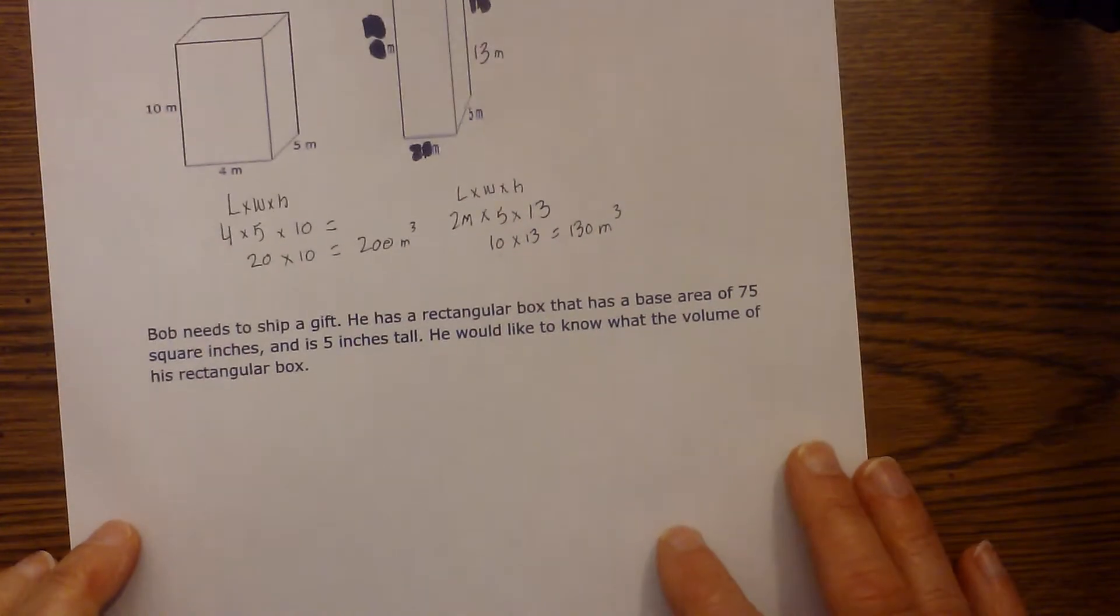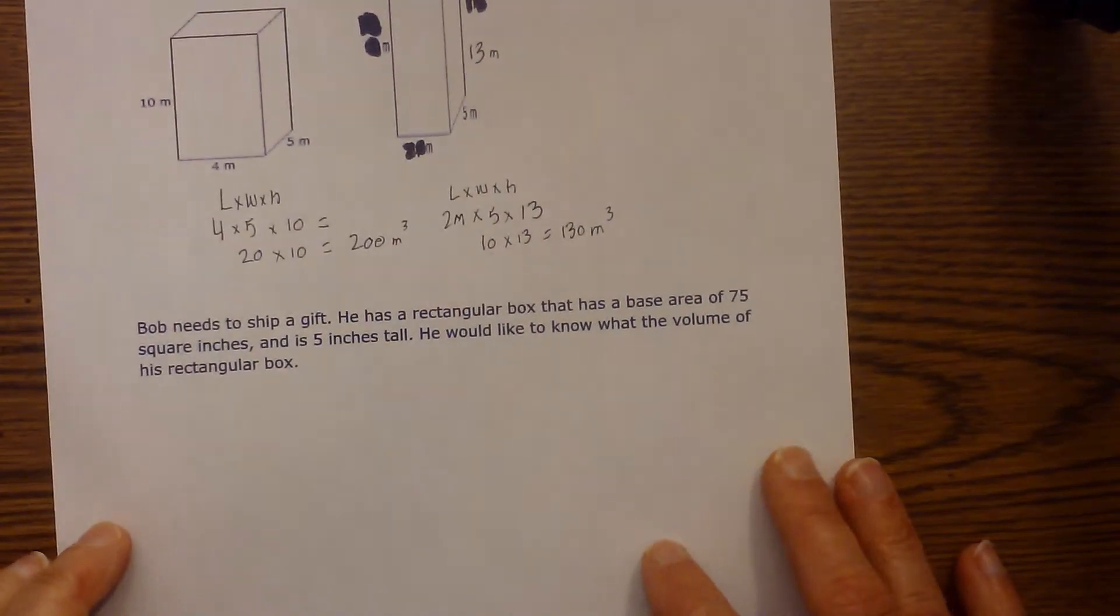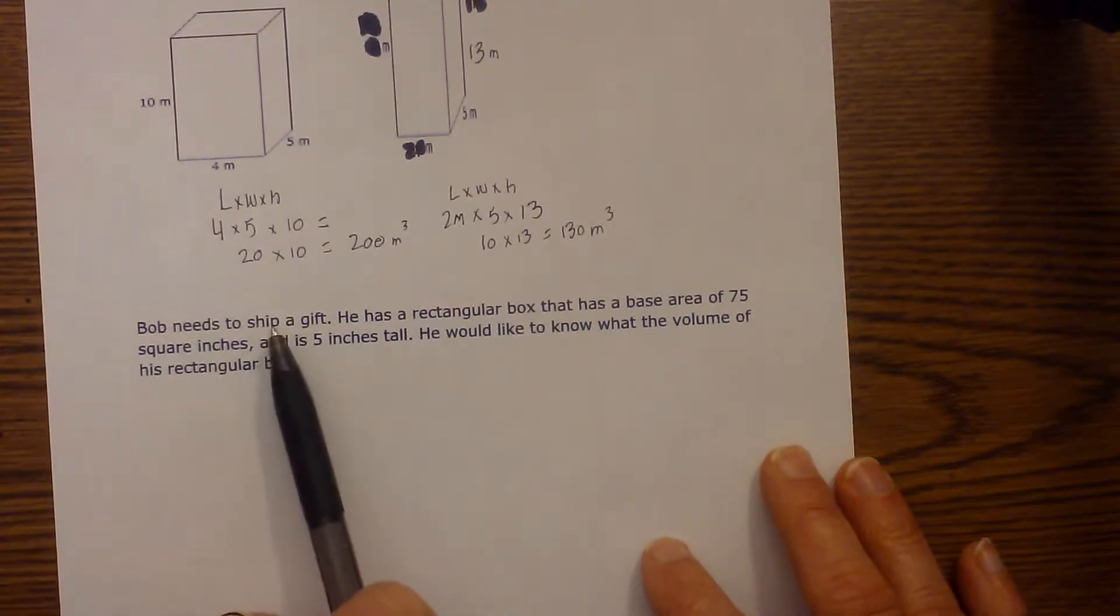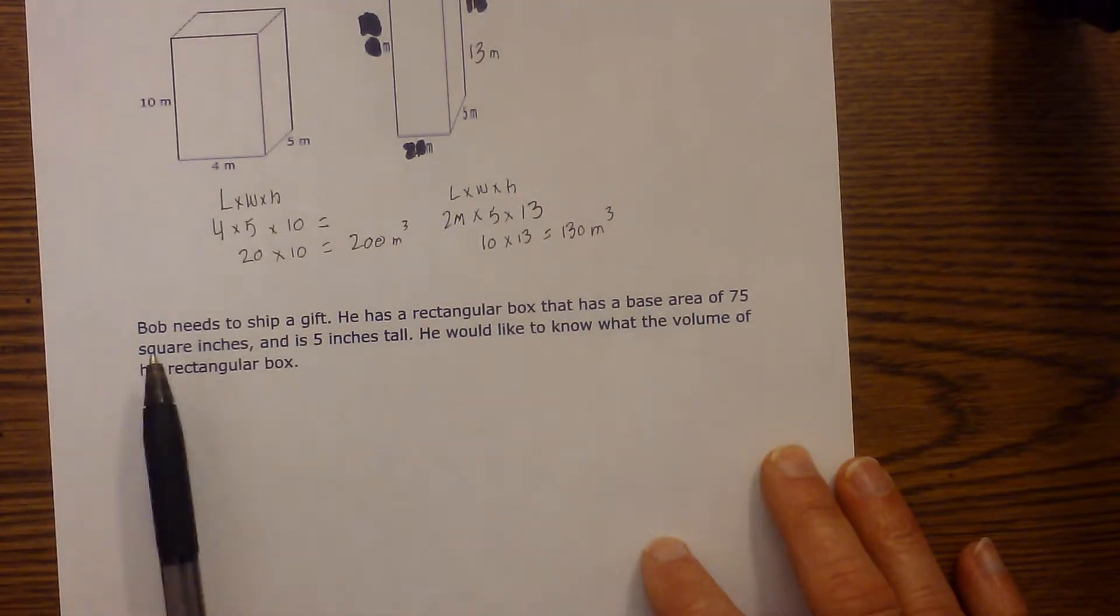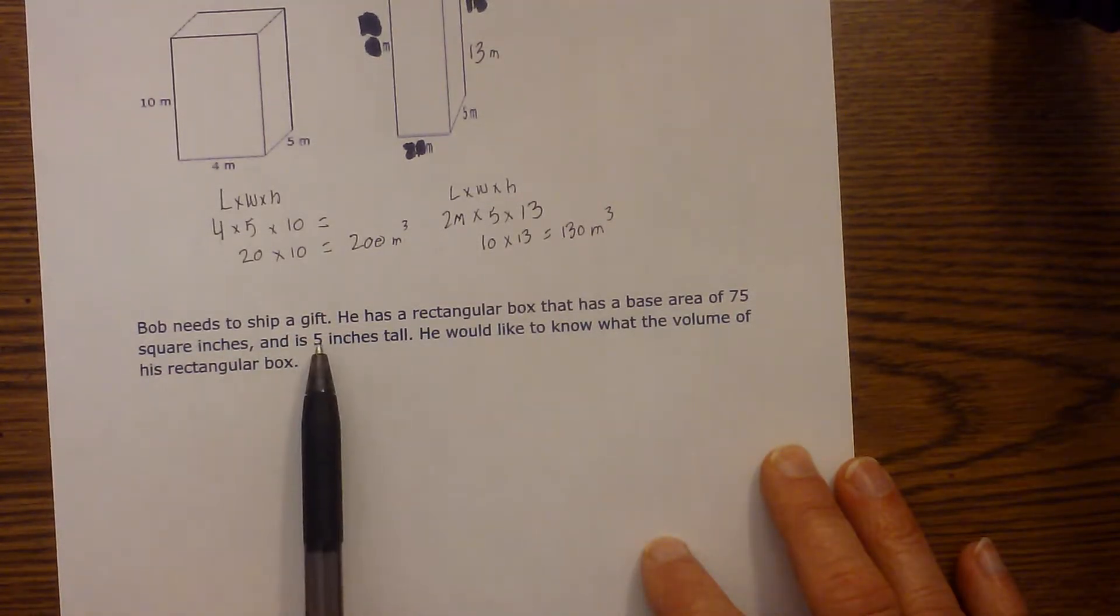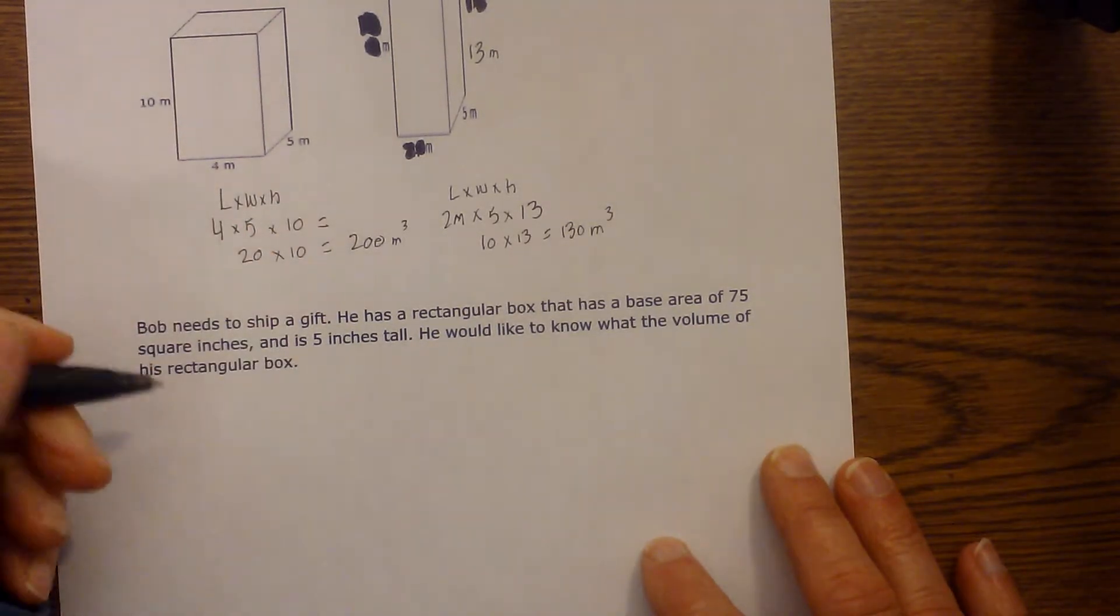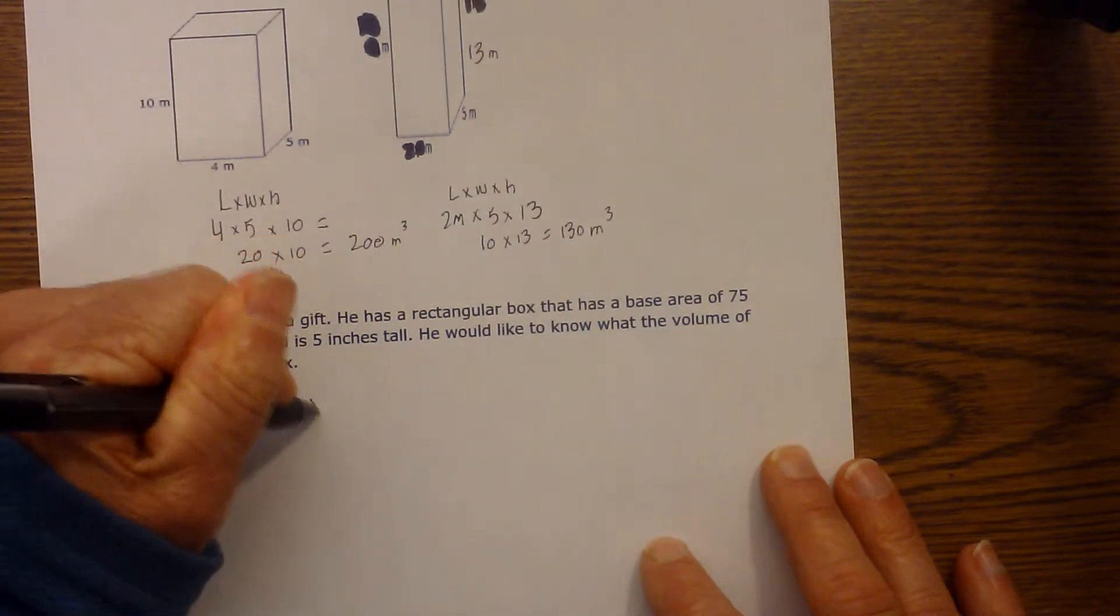The next type of problem you may encounter is a word problem. Bob needs to ship a gift. He has a rectangular box that has a base area of 75 square inches and is 5 inches tall. He would like to know the volume of the rectangular box. So in this particular example I'm going to use volume is equal to base times height.